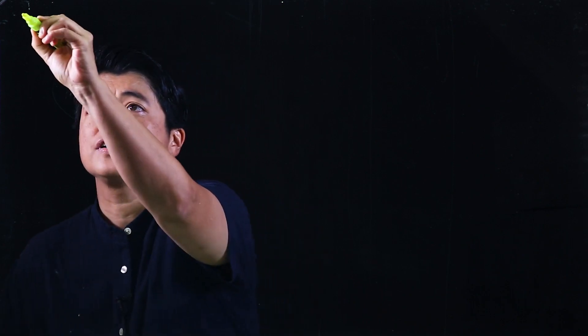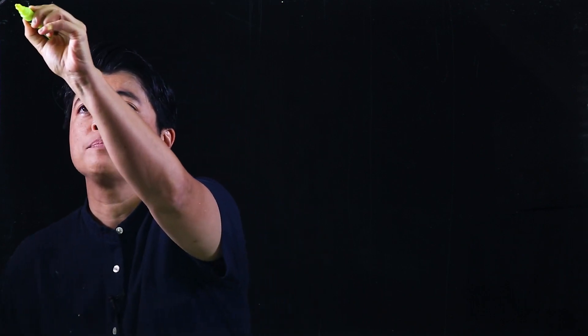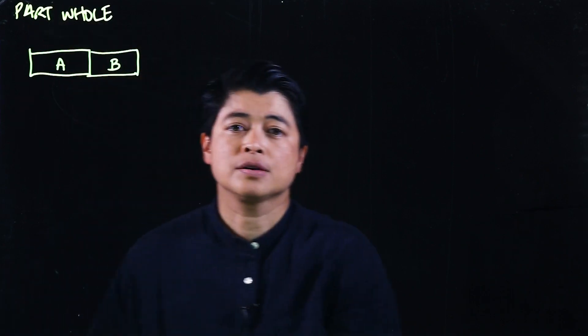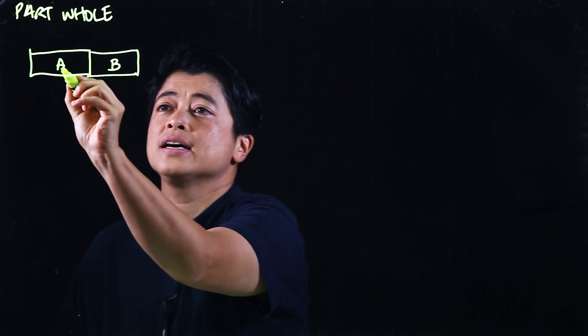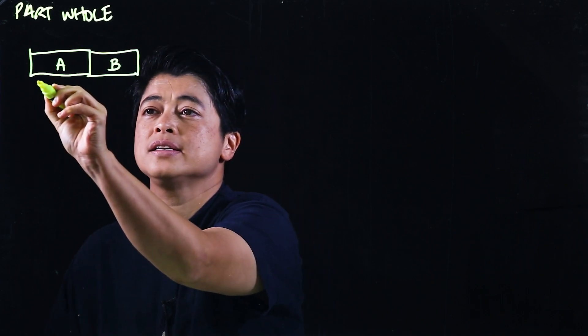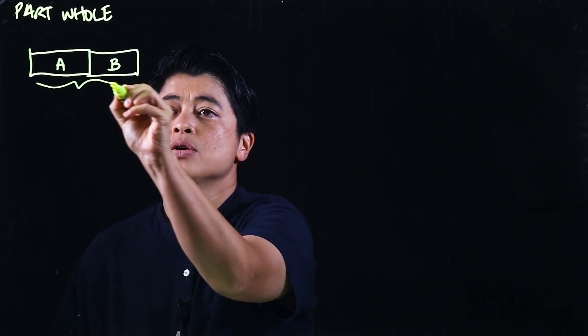For reference, I'll write them down. The first is the part-whole bar model. This has part A and part B, and together they make the whole.